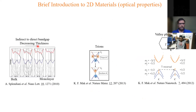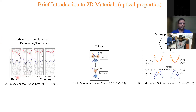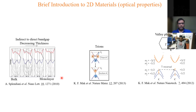Looking at the optical properties, this famous plot shows that as we reduce the thickness of bulk MoS2 from bulk to monolayer, the band structure changes, especially around the gamma point of the Brillouin zone. In the bulk form it was an indirect band gap, but as you decrease the thickness the valence band decreases in energy and in the monolayer limit it becomes a direct band gap material.